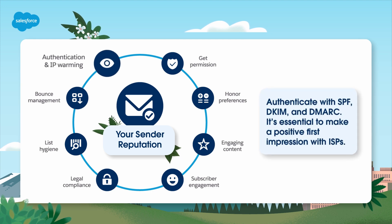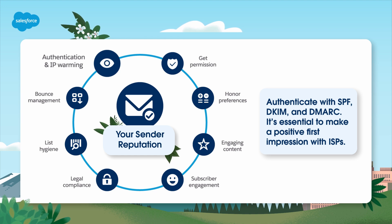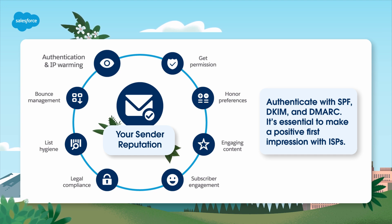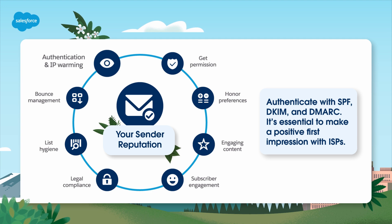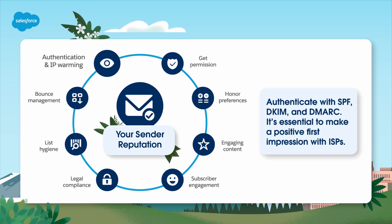Authentication — the above tips are ongoing. These last two are typically addressed during your Marketing Cloud implementation, but they're still worth a mention. Authenticate your domain with SPF, DKIM, and DMARC. It helps ISPs trust your emails instead of identifying them as spam. If this wasn't already covered in your implementation, you can learn more on our help site. IP warming — most Marketing Cloud customers are on a shared IP. If you use a dedicated IP, start sending in gradually larger numbers to build a good sender reputation. It's essential to make a positive first impression with ISPs.